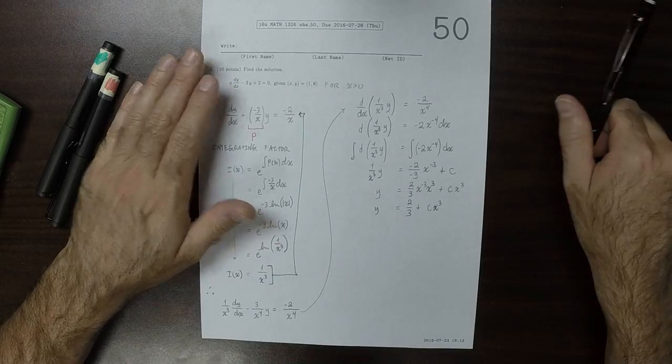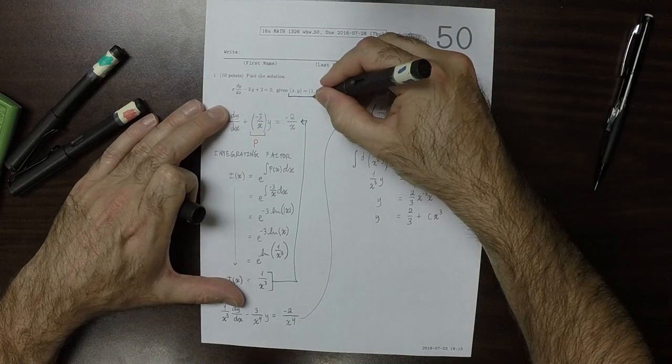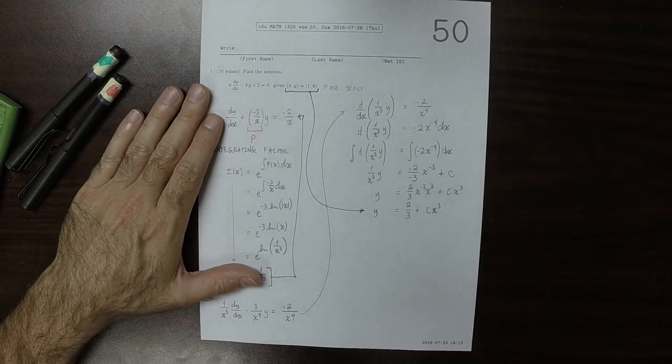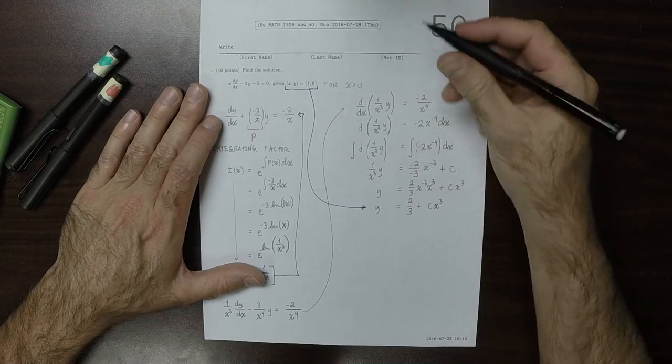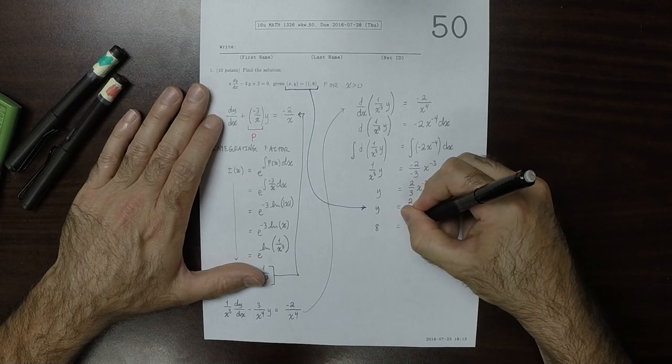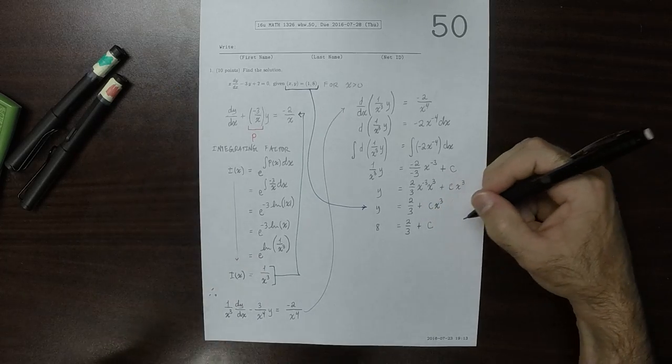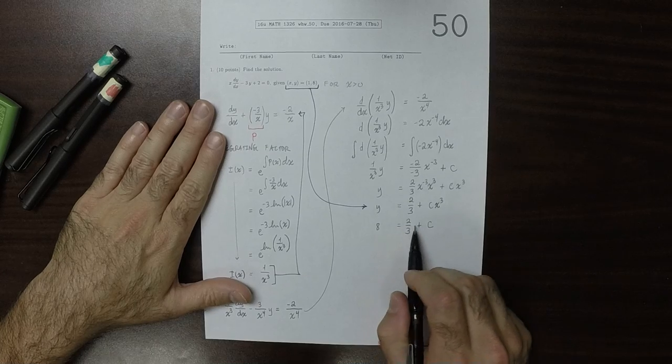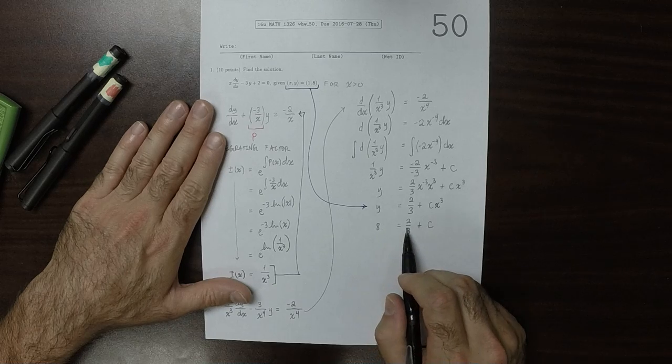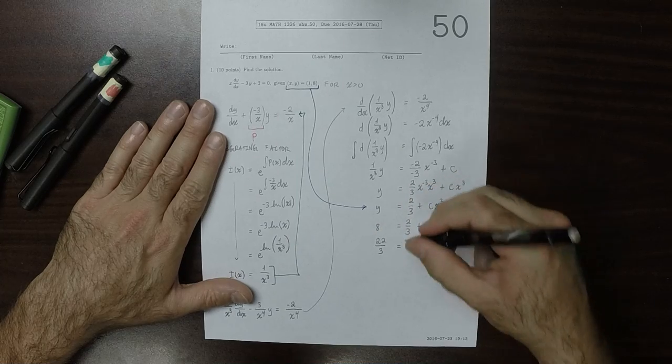Now, to figure out c, we can use the initial data. When we plug in x equals 1, y equals 8, that should be a solution. So 8 equals 2/3 plus c times 1 cubed. 8 minus 2/3, well, this is 24/3 minus 2/3, so that's 22/3, which is c.